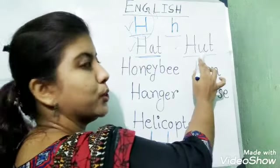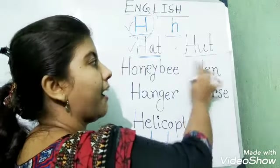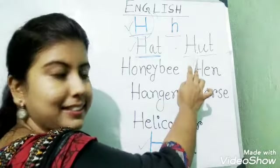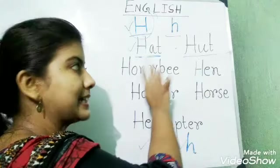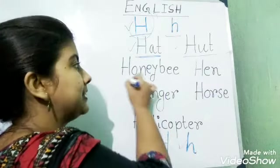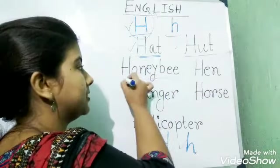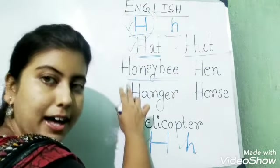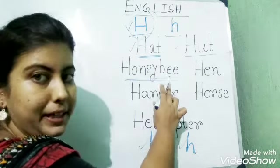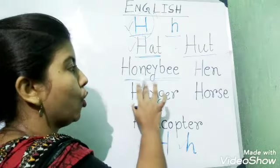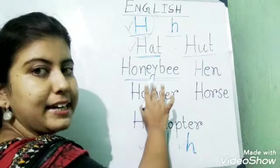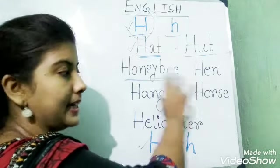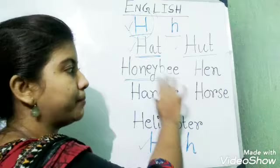The second word is H-U-T, hut. Then the next one: honeybee. H-O-N-E-Y, B-E-E. Honeybee.